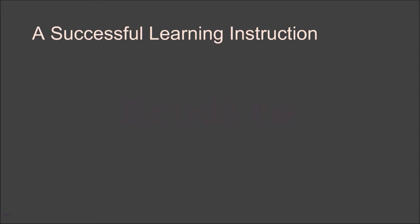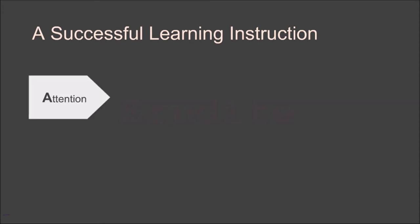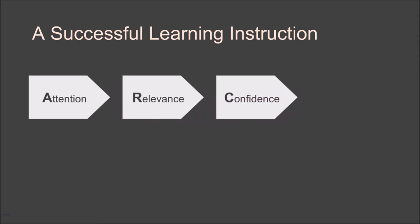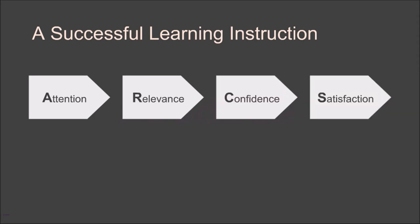Another principle of successful learning is the ARCS principle — your learning must first attract Attention, establish Relevance, deliver Confidence, and finally the learner must derive Satisfaction. For kids, we focus more on attention to retain interest. For adults, relevance becomes more important than attention. Once you establish the 'why' or 'what's in it for me,' you can convince an adult, and then it's a matter of establishing confidence and satisfaction.